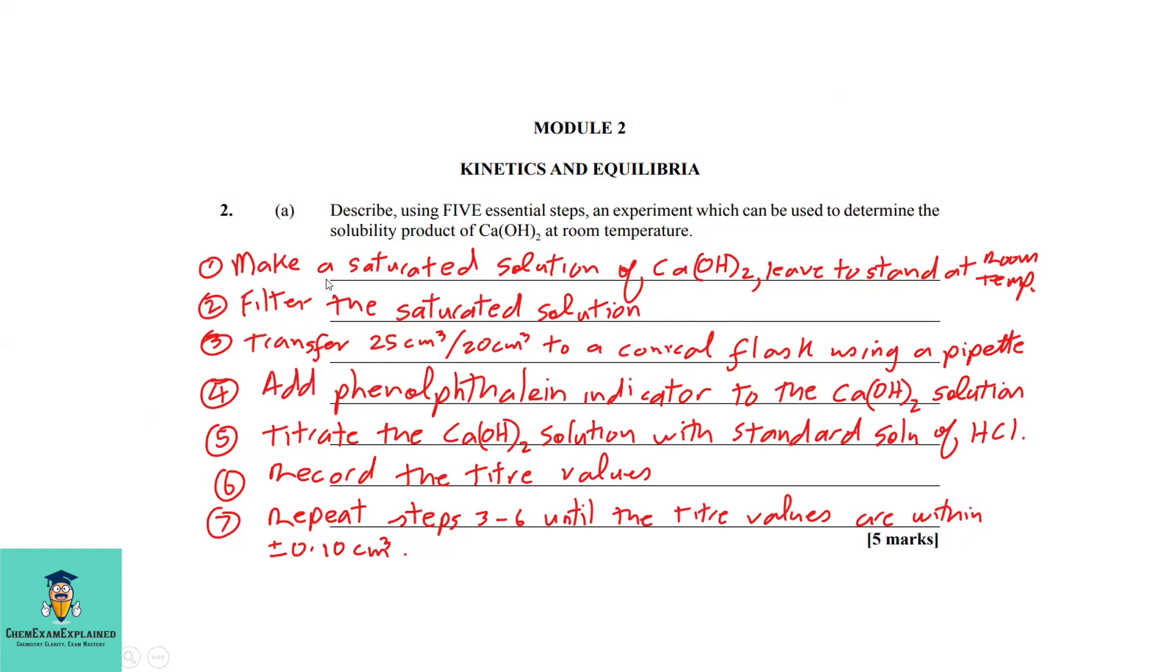The first thing we're going to do is make a saturated solution of calcium hydroxide and leave it to stand at room temperature. Step 3: Transfer 25 cm³ or 20 cm³ to a conical flask using a pipette.